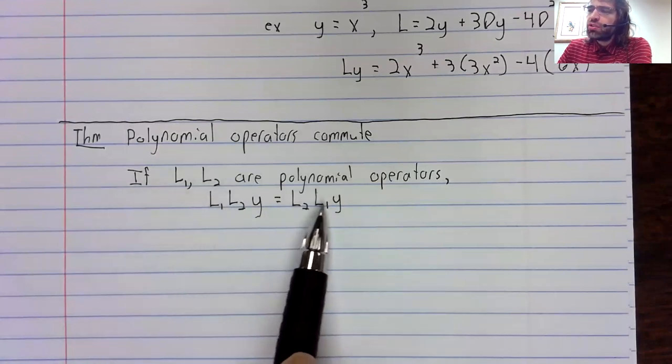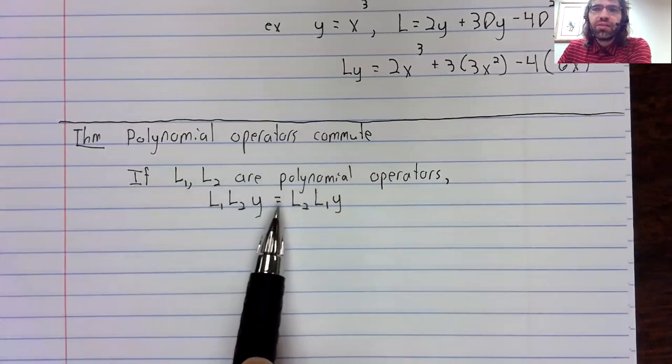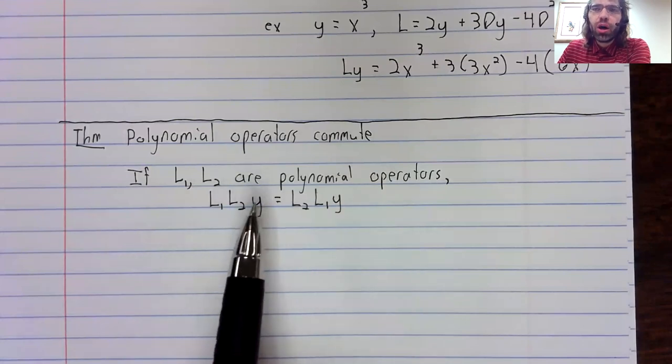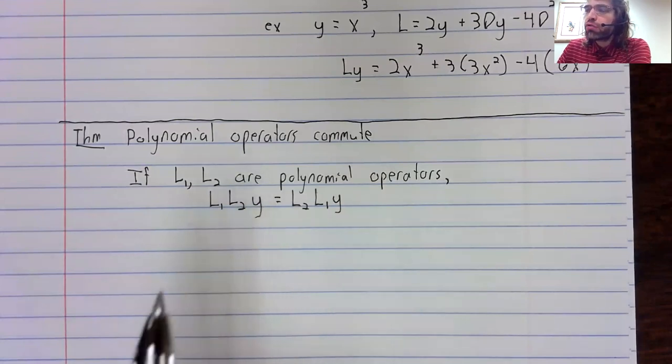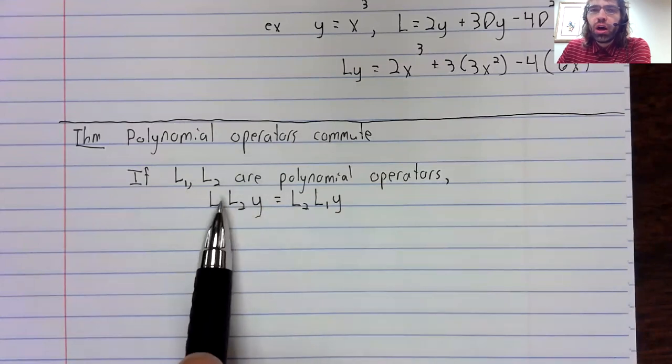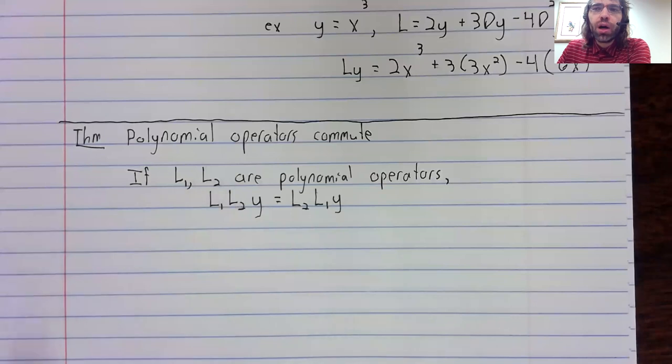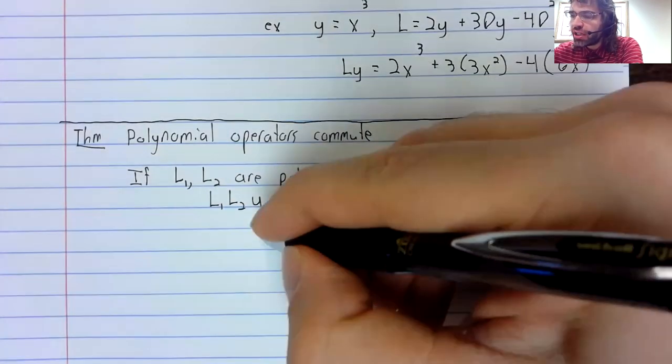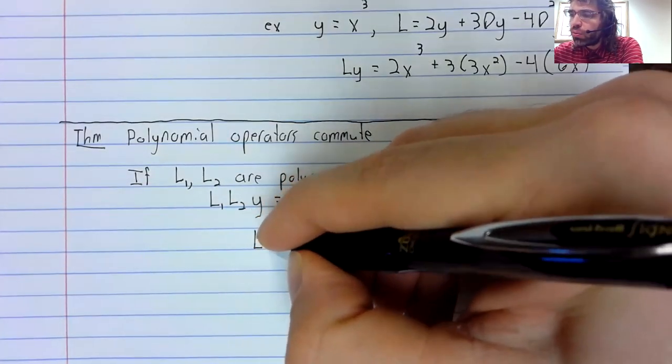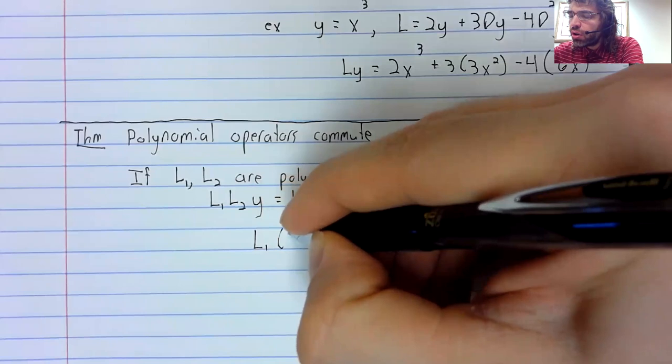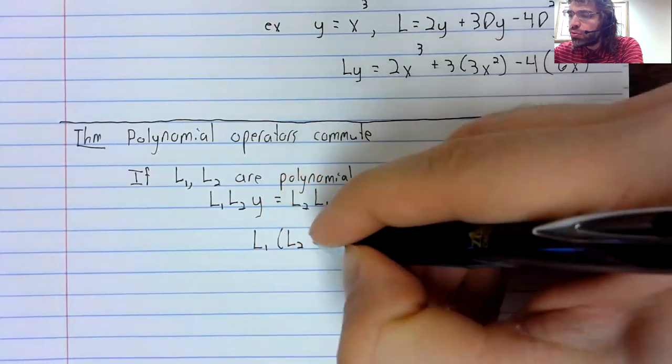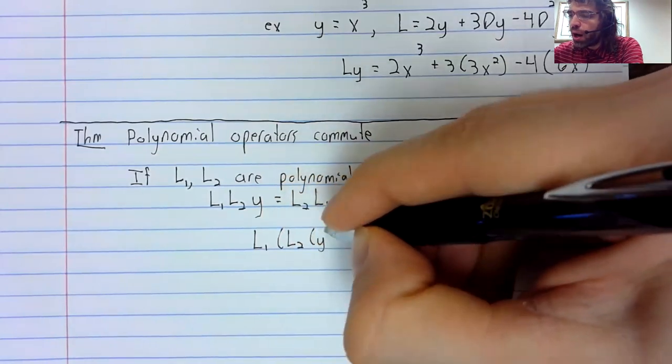And when you see this written out like this, it looks obvious, but it's not obvious at all. Remember that this is not multiplication. L1 and L2 are functions. What we have here is composition.